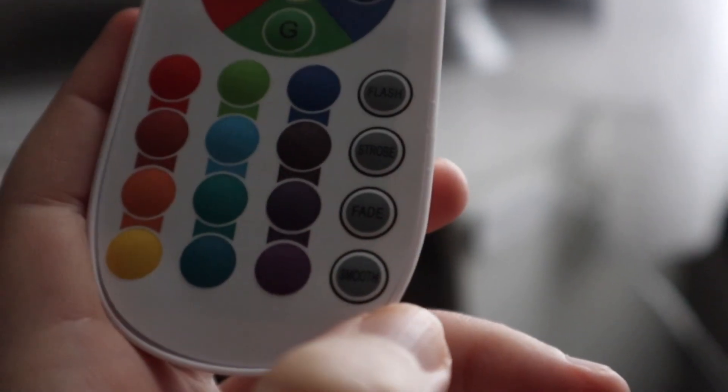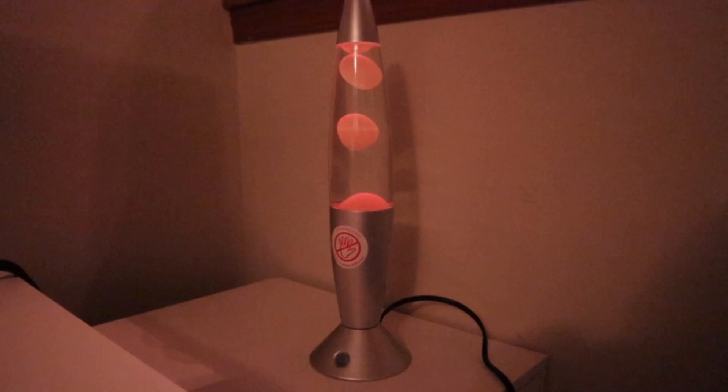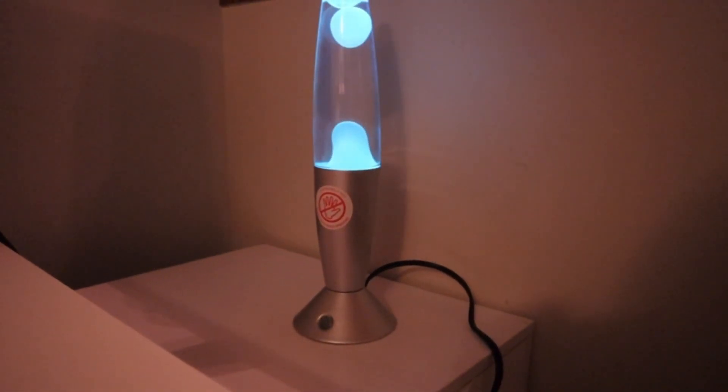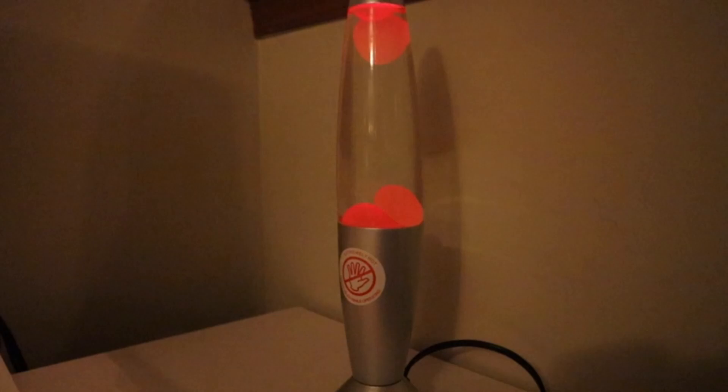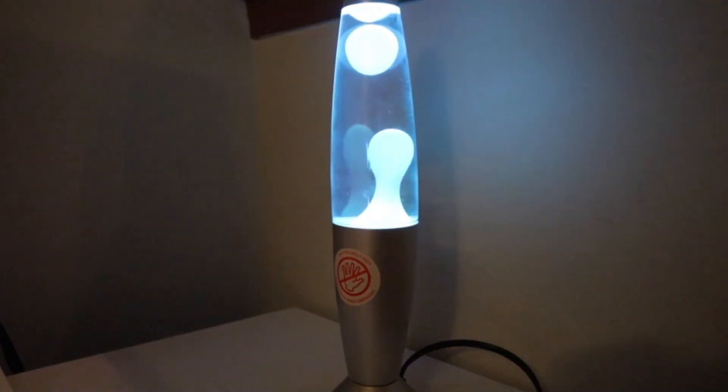What's really cool is that this lamp comes with an RGB remote and you can adjust the brightness. You can also change the color of the lamp with 16 different color options, along with four different modes that include flash, strobe, fade, and smooth.